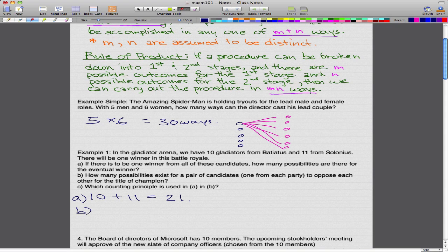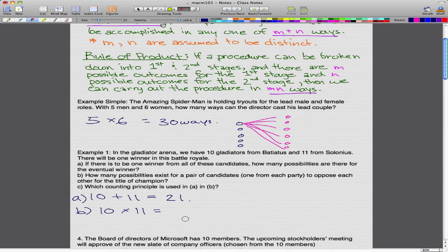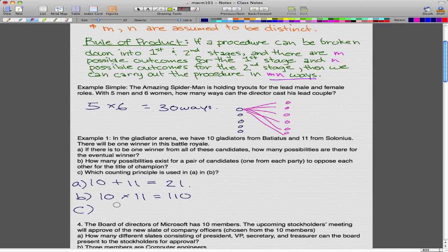Part B: How many possibilities exist for a pair of candidates, one from each party, to oppose each other for the title of champion? If you guessed rule of product, then you guessed right. You have 10 people from Batiatus and 11 people from Solonius. Similar to this, we have 10 circles here and 11 circles here. The first person can be paired against any of the other 11 from the opposing team and so on. That is what gives us 110, which is 10 times 11. I have horrible mental math. So we have 110. My brain is just not working today, but I somehow got an A in the course.